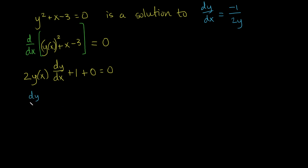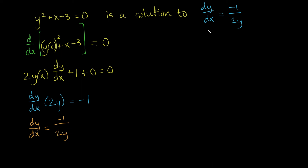So dy/dx times 2y equals negative 1, and dividing by 2y gives us dy/dx equals negative 1 divided by 2y, which is indeed what we had in the original differential equation. By implicitly differentiating the solution, we were able to successfully verify that yes, this is a valid solution to the differential equation. See you in the next video.